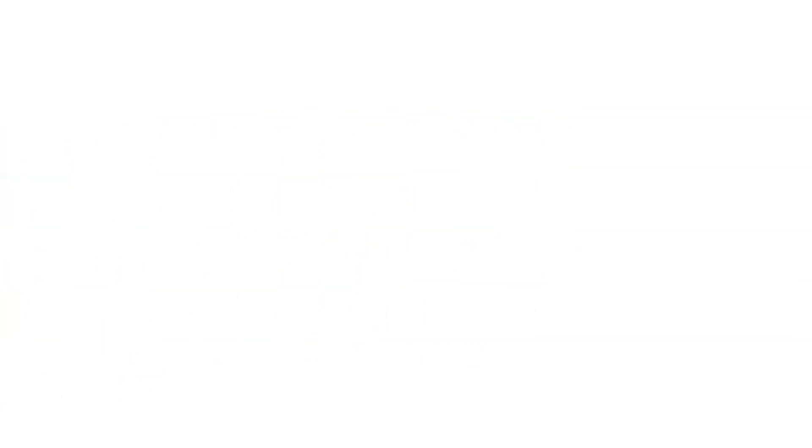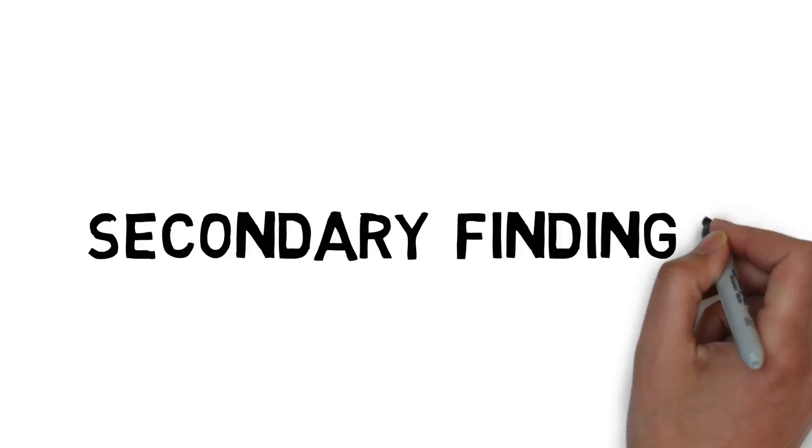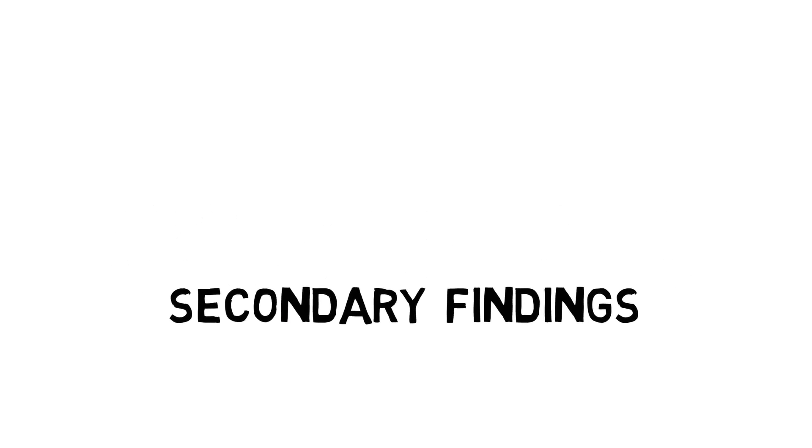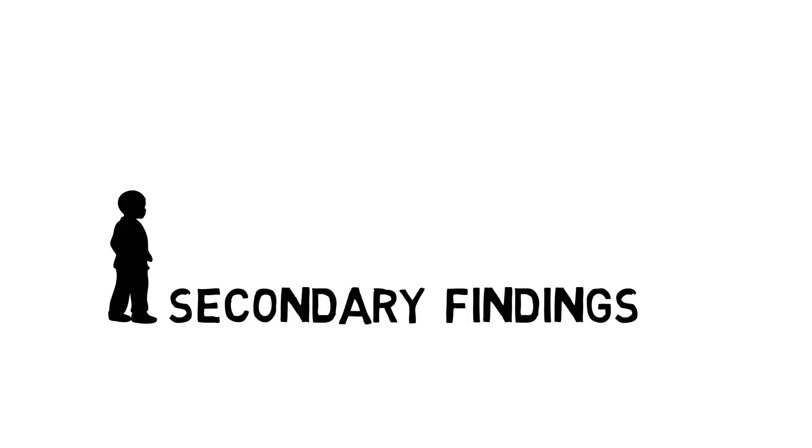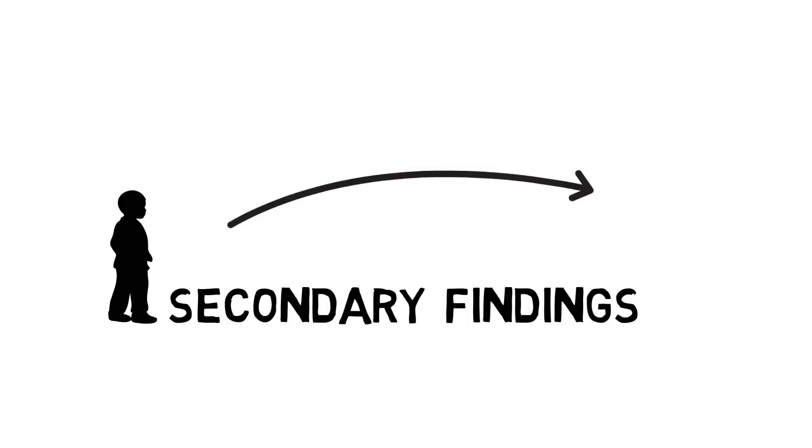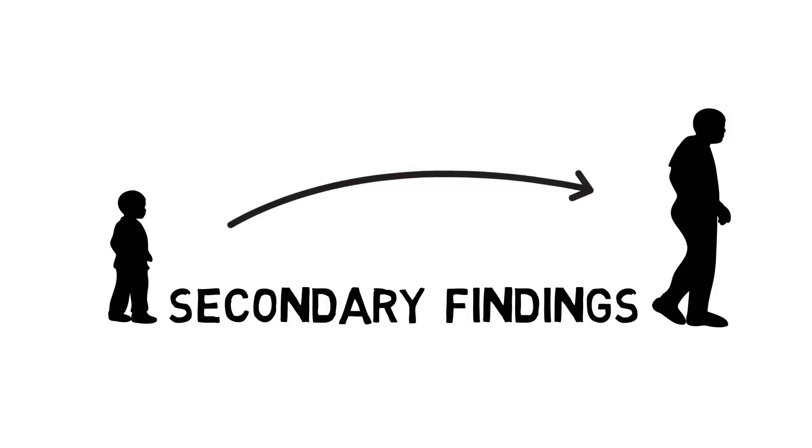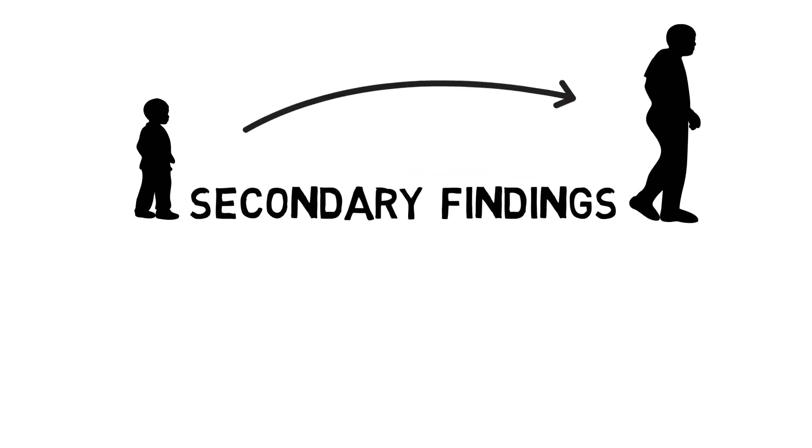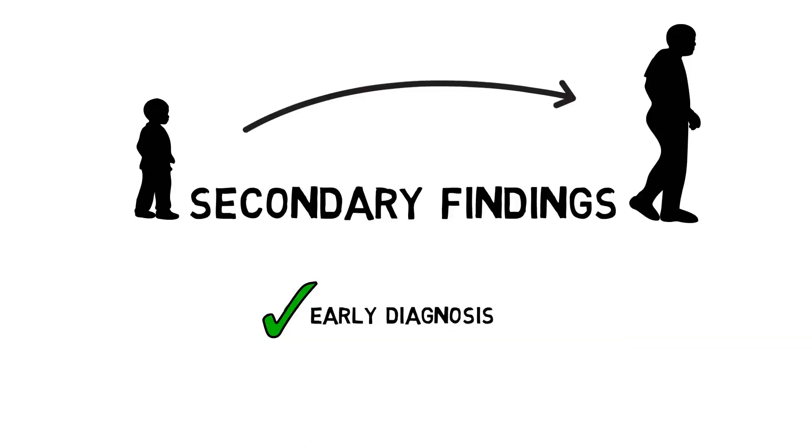Secondary findings can be upsetting, often because we are not expecting them. For instance, some secondary findings may reveal a risk for a disease that will not impact Jimmy as a child, but may impact his health as an adult. This information can lead to early diagnosis or a possible treatment that may improve Jimmy's health and well-being.